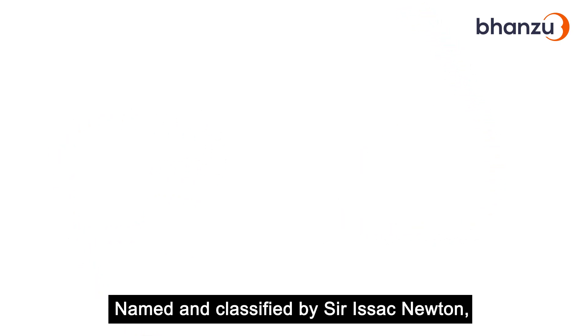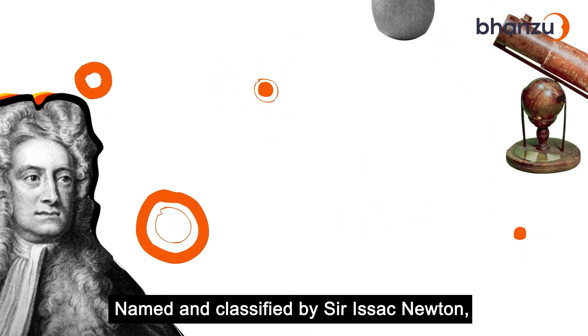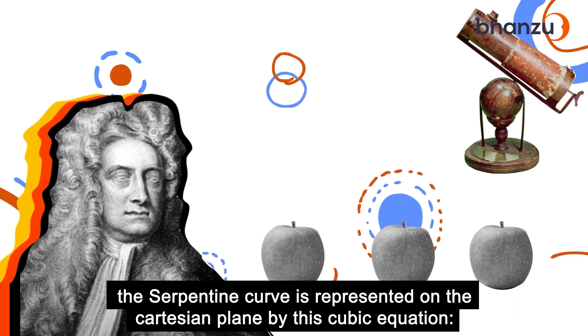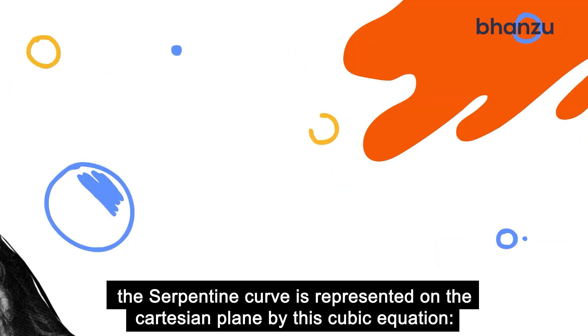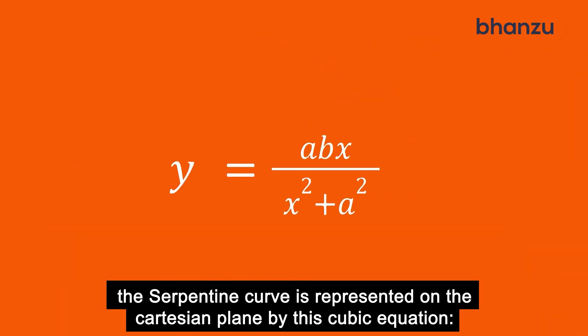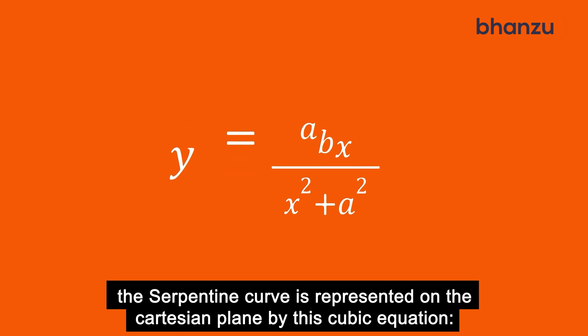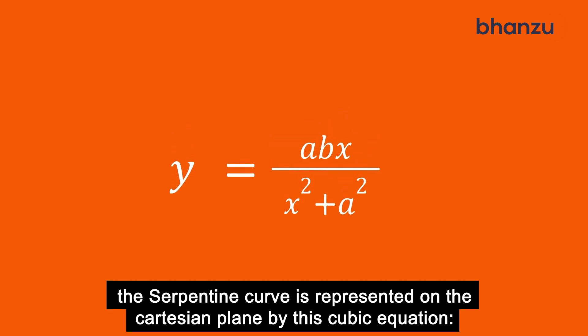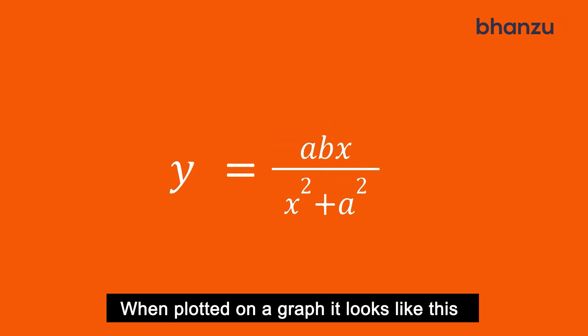Named and classified by Sir Isaac Newton, the serpentine curve is represented on a Cartesian plane by this cubic equation: y is equal to abx divided by x squared plus a squared.